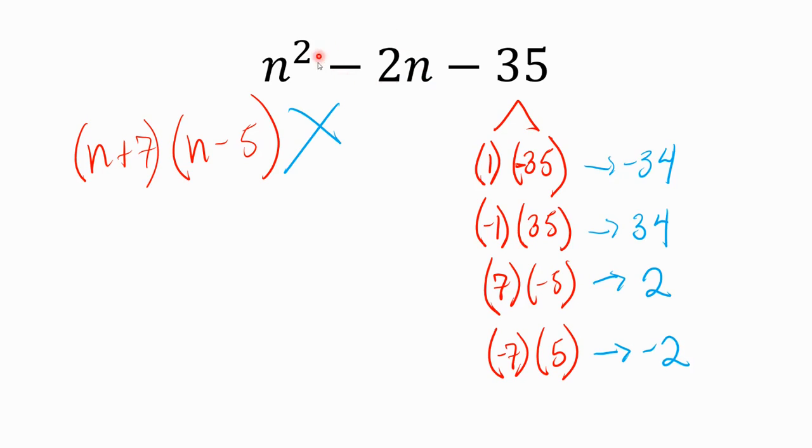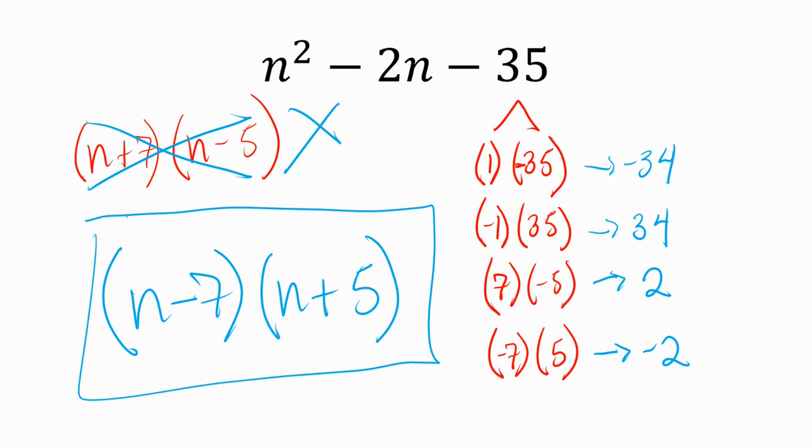I'm looking for a negative because this is minus 2n in the middle. So we need to pick the terms that give us negative 2. We actually didn't want 7 and negative 5. We wanted negative 7 and positive 5. So it's (n - 7)(n + 5). Be very careful with your signs. Make sure you're picking the right one to be negative and the right one to be positive.